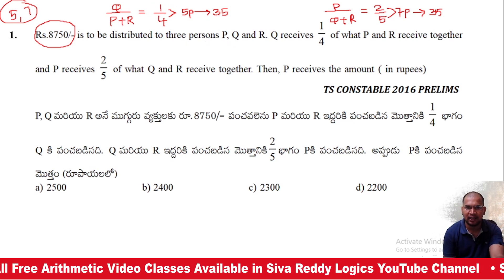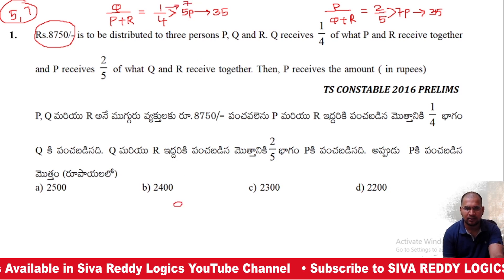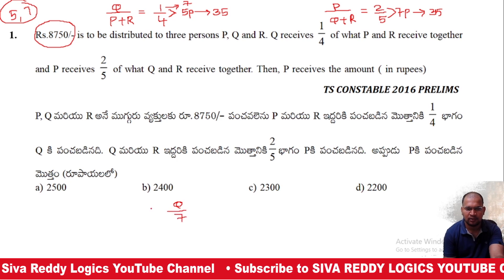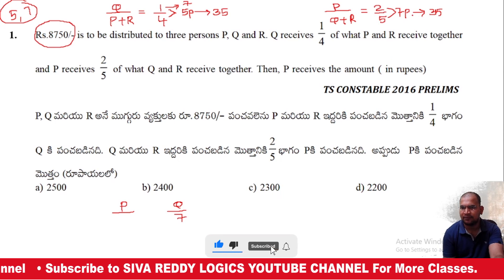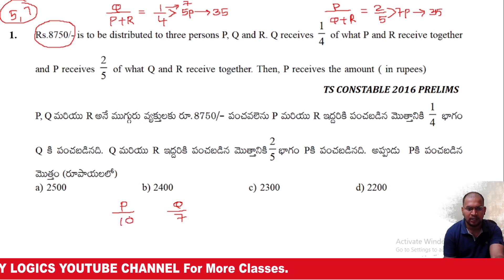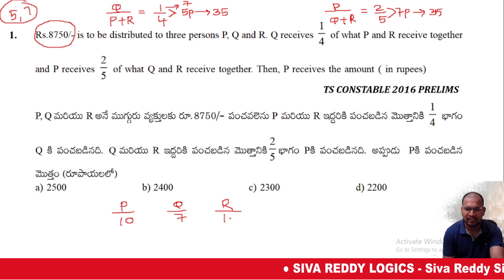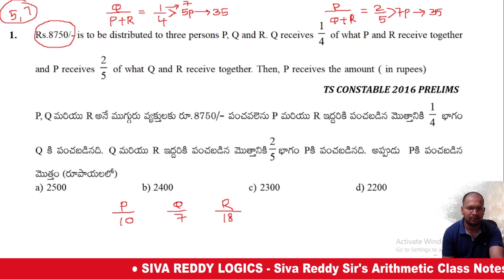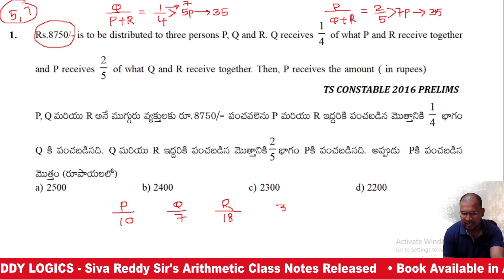With 5 parts equal to 35, one part equals 7, so Q is 7. P is 2 parts, and 7 parts equals 35, so 2 parts equals 10. P is 10 and Q is 7. R equals 35 minus 17, which is 18. So 10 plus 7 plus 18 equals 35 parts total.